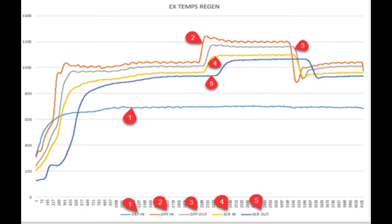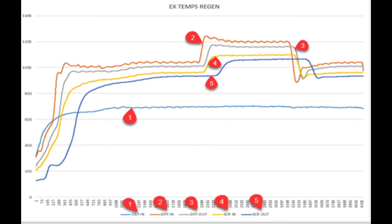The first thing that you need to know is this is a typical regen of an ISX CM2250. This is a 15 liter. It's important that you know it's a 2250 — that's the platform. We talked about platforms in another video. This platform regens differently than the new 2350. That won't look like this. This is normal for the 2250.